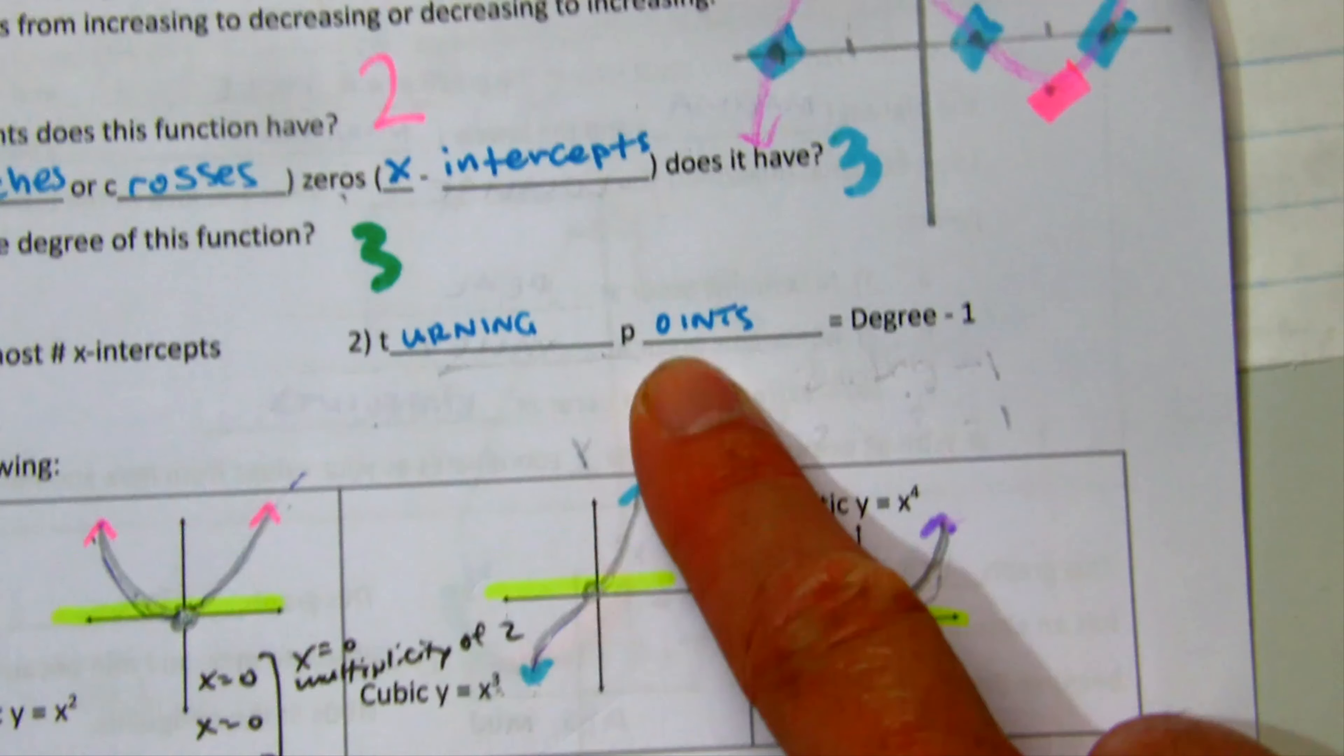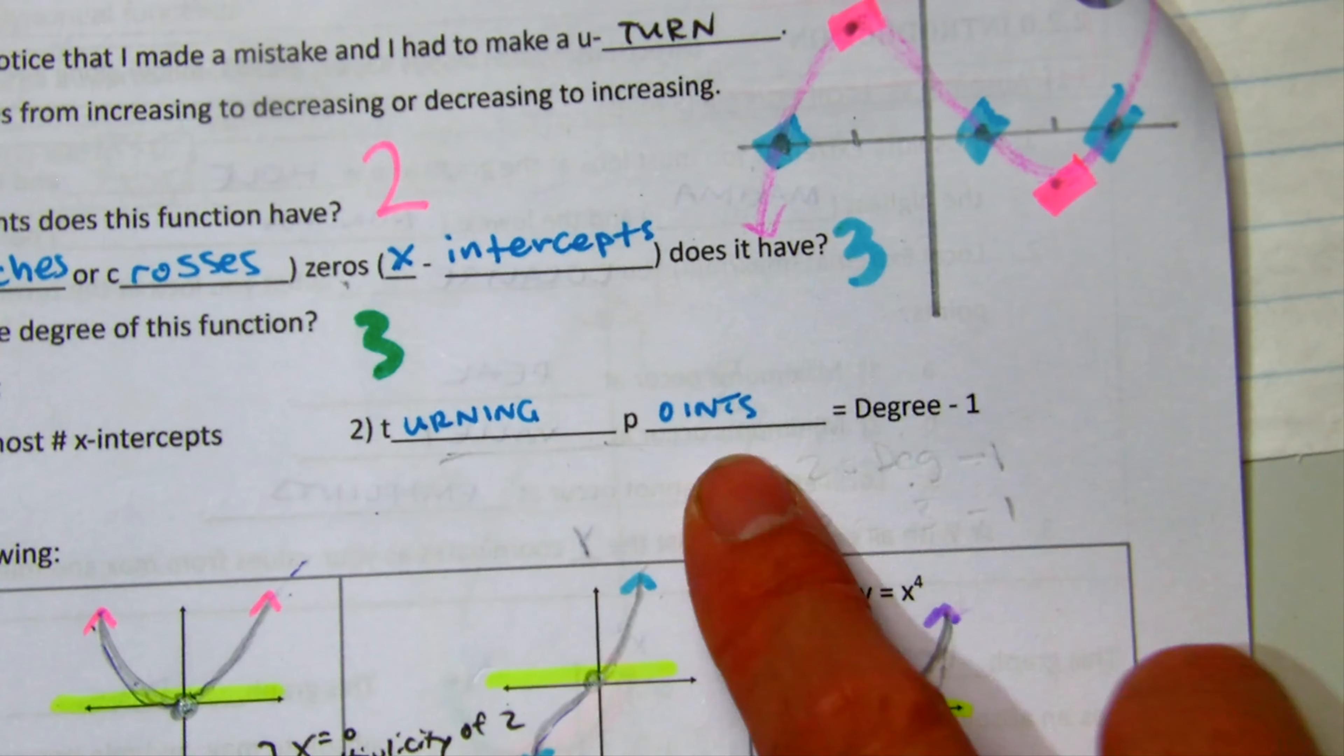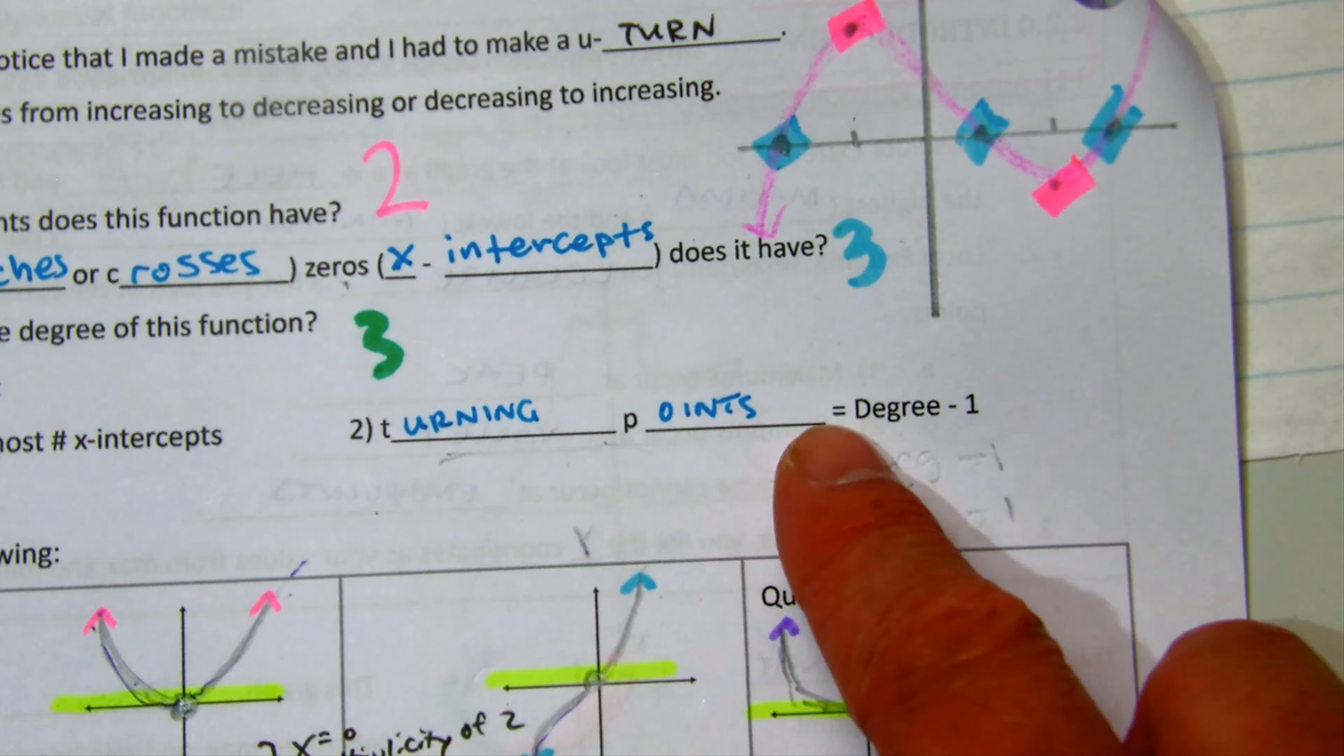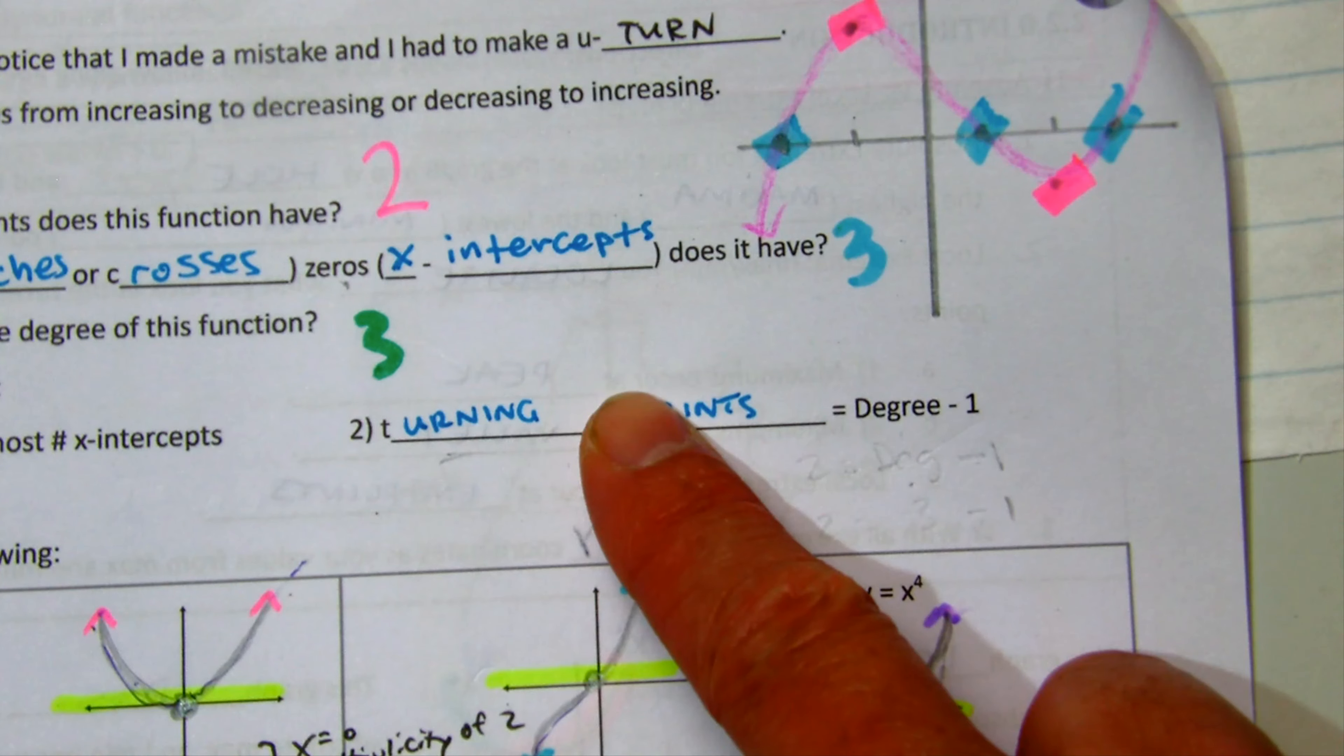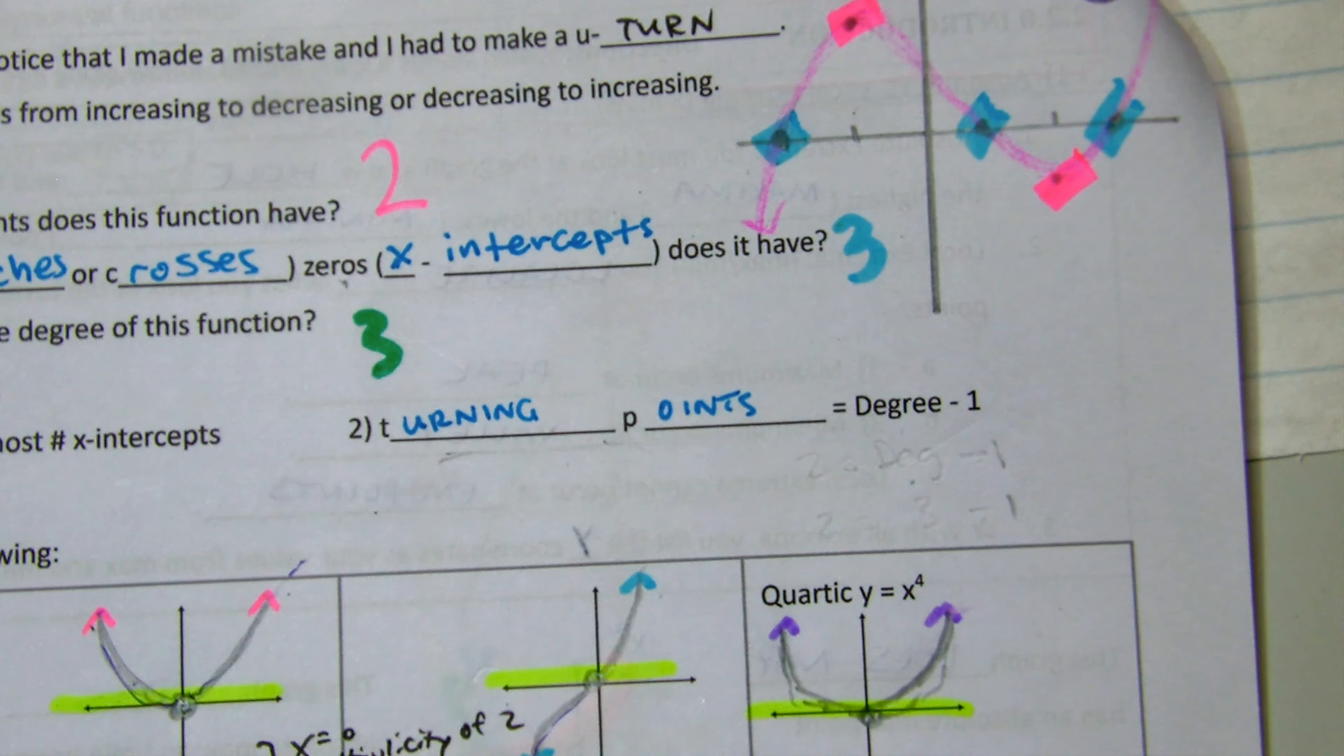So if you know the number of turning points, like up here in pink, let's say you have, in this case, we have 1, 2 turning points. So 2 equals degree minus 1. You can add 1, or realize that degree is 3. 3 minus 1 equals 2. So that is the formula sheet for our first quiz, or second quiz.